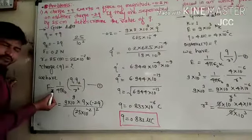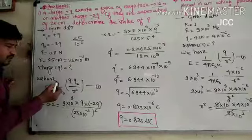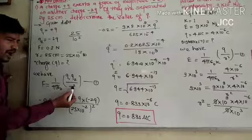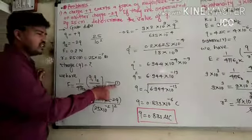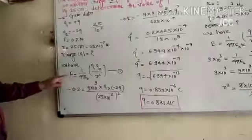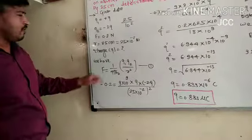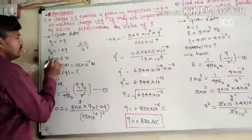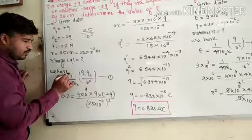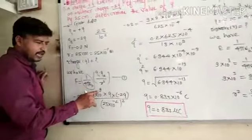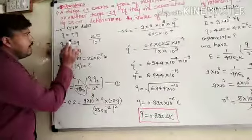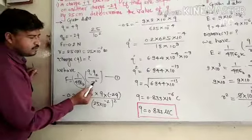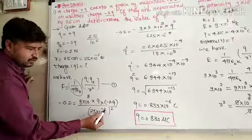We know that electrostatic force F equals 1 upon 4 pi epsilon 0 Q1 Q2 upon R square according to Coulomb's law. Substituting the value of F, Q1, Q2 in above equation, F's value is minus 0.2 Newton equal to 9 into 10 raise to 9 into Q1 value is Q into Q2 value is minus 2Q divided by small r, 25 into 10 raise to minus 2.